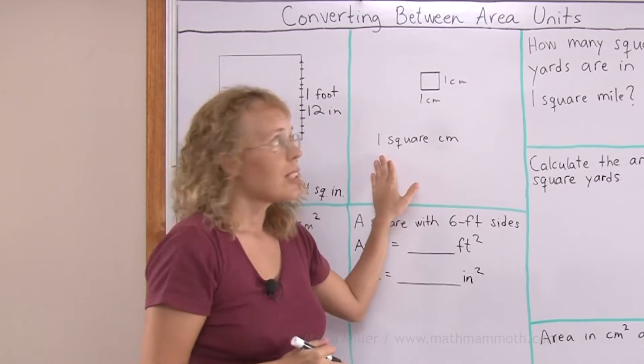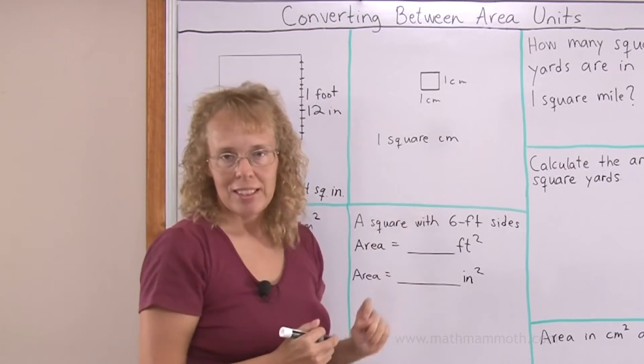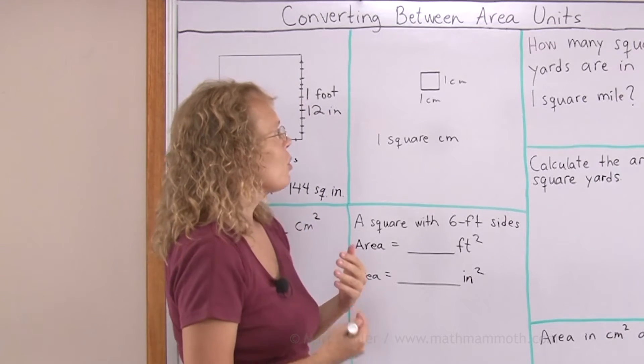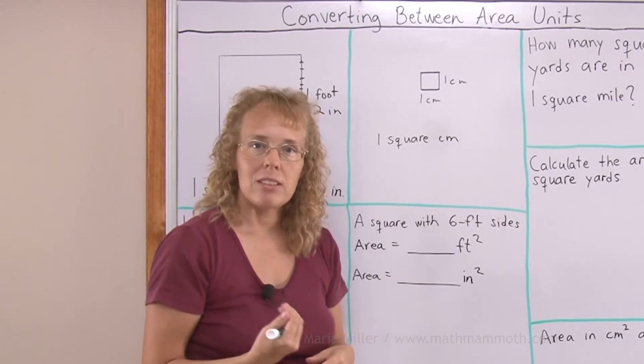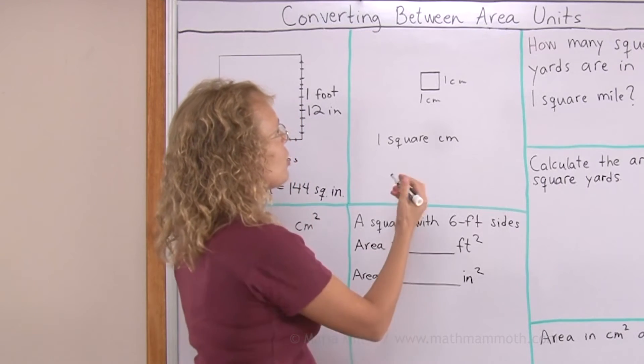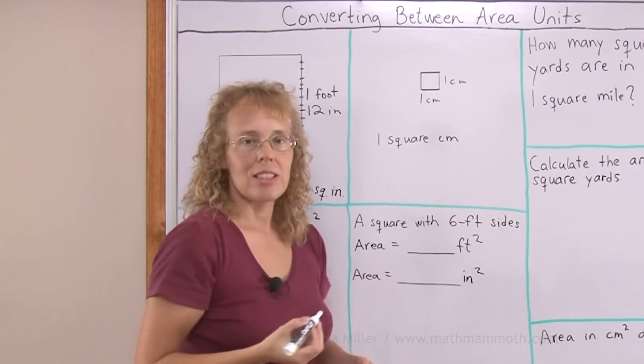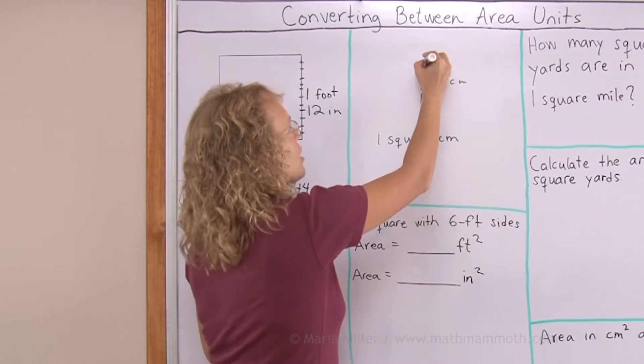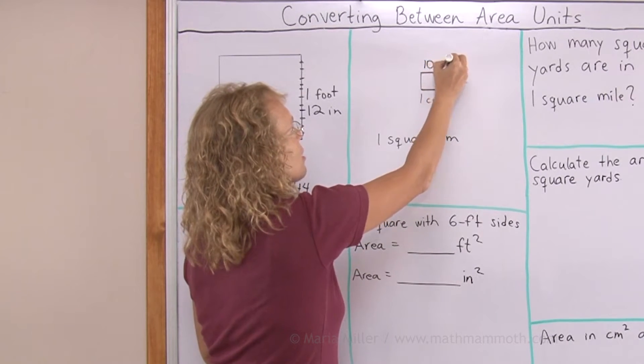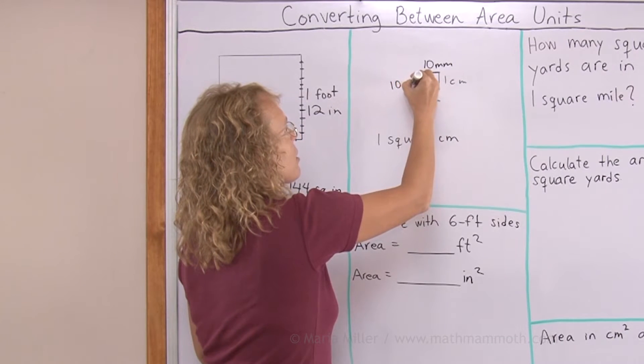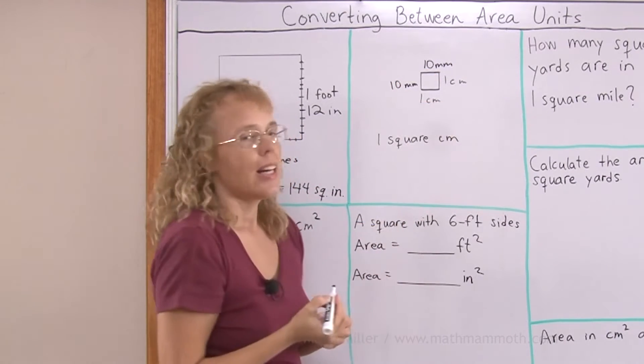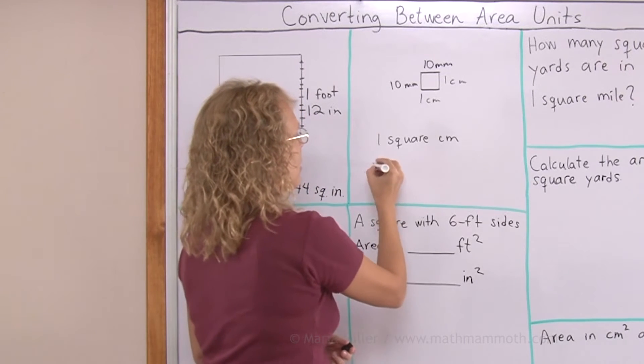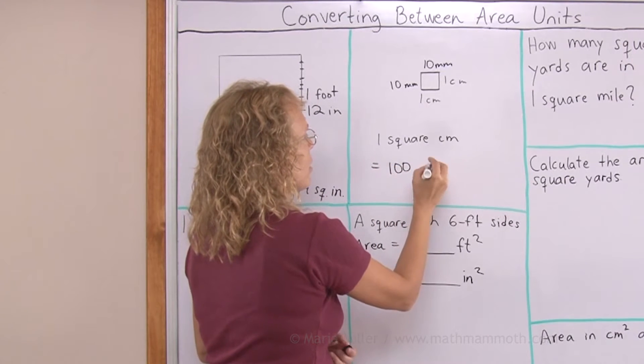Here is one square centimeter. Each side is one centimeter, so the area is one square centimeter. But what if we want to know the area in square millimeters? All we do is think how many millimeters is one side. One centimeter is 10 millimeters, so this side is 10 millimeters, this side is 10 millimeters. And when we multiply, 10 times 10 equals 100, and we get 100 square millimeters.